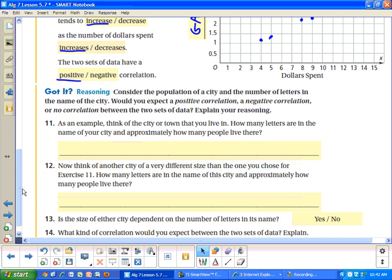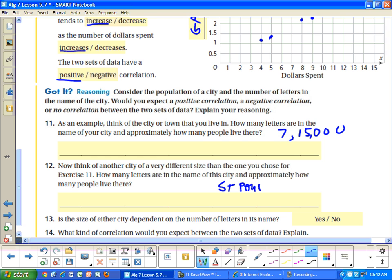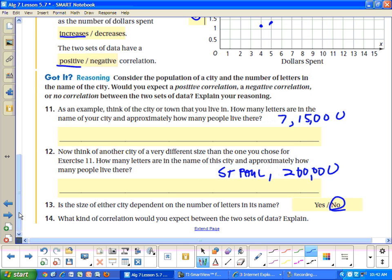All right, consider the population of cities as the number of letters in the name of the city. Do you expect a positive correlation, negative correlation, or no correlation? Explain the reason. As an example, take a look at the city of Buffalo. How many letters are in the name of your city? In Buffalo, there are seven letters, and there's about 50,000 people there. Think of another city a very different size. How about St. Paul? And I think there's about 200,000 people there, maybe. Is the size of either city dependent on the number of letters? What kind of correlation would you expect between the two sets of data? I would expect no correlation because the population has nothing to do with the length of the name.